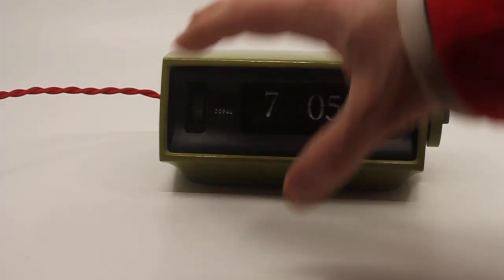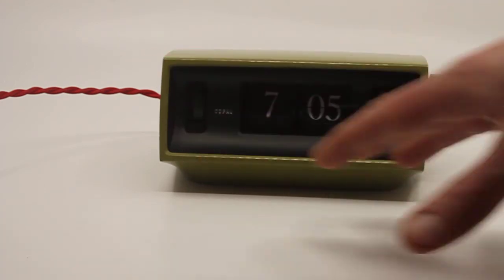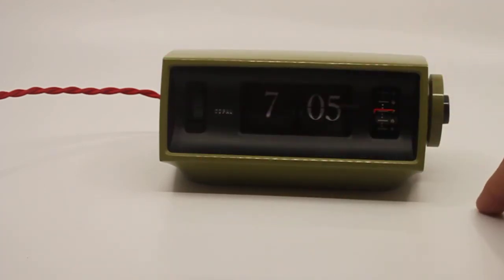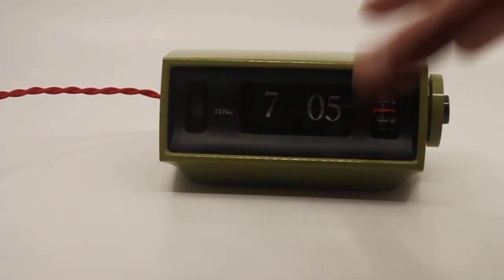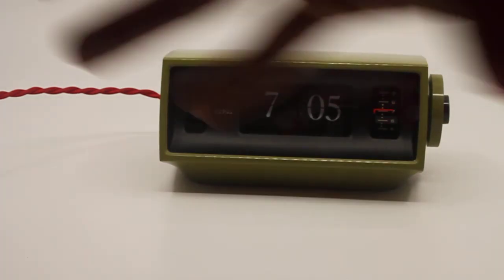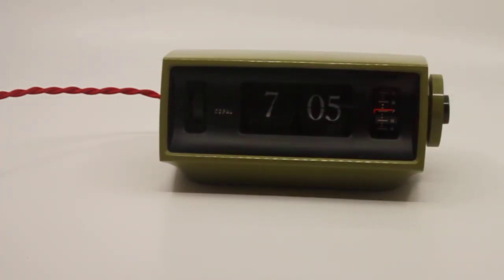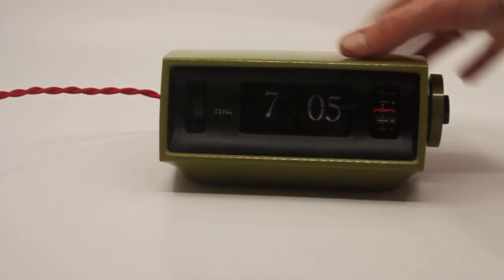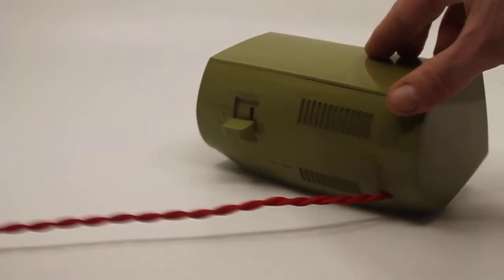There you go. The glass was polished, new wiring, new light, new resistor. The motor was cleaned and lubricated, new cable, new plug. Basically, this clock is good to go for another many years.